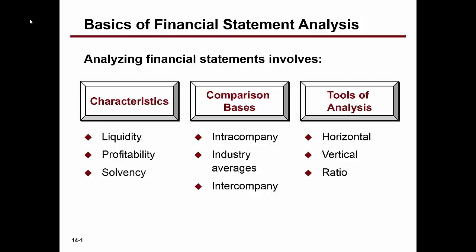When we do intra-company analysis, we're comparing the company to itself over time or relative to different financial statement line items. Industry averages compare the company to the overall industry. Inter-company analysis compares results to a specific company — maybe a trendsetter or gold standard in the industry. The tools we use are horizontal and vertical analysis, relevant to intra-company, and ratio analysis for inter-company and industry averages. You already know some of these profitability ratio analyses.